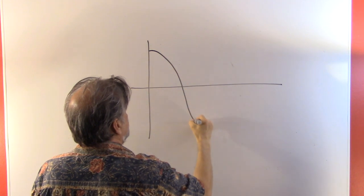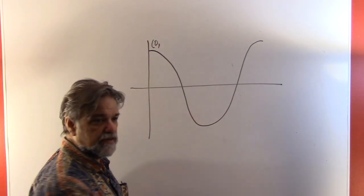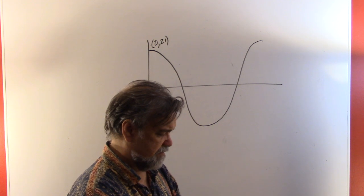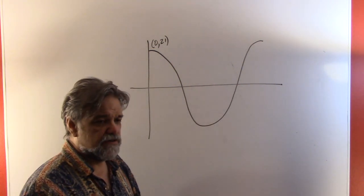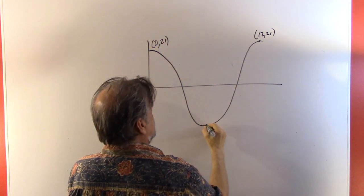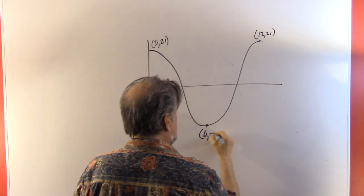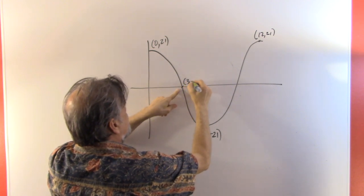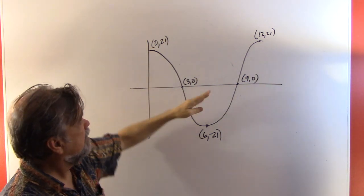Mean sea level is zero, and our y-axis is at 12 noon when high tide is 21 feet up. The graph starts at (0, 21), comes down to low tide at (6, −21), and returns to (12, 21). Midpoints are at t = 3 and t = 9, where the tide crosses mean sea level.